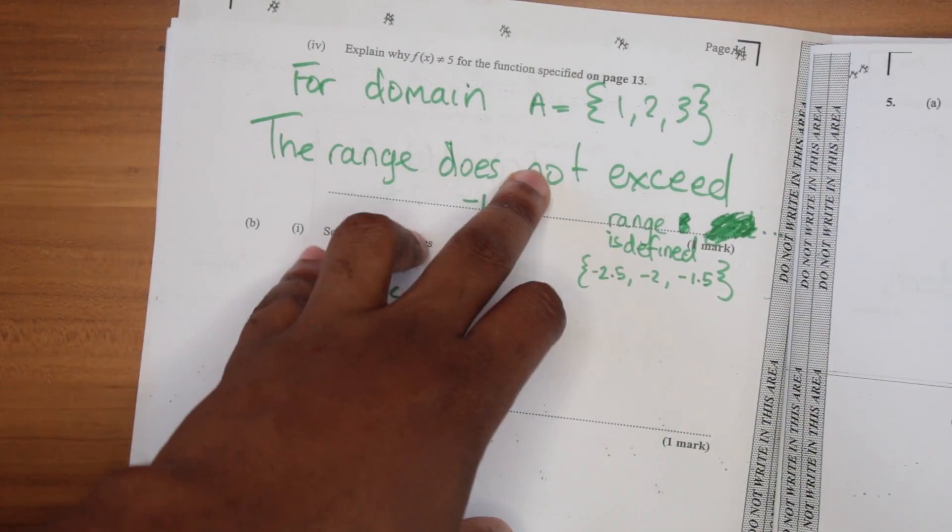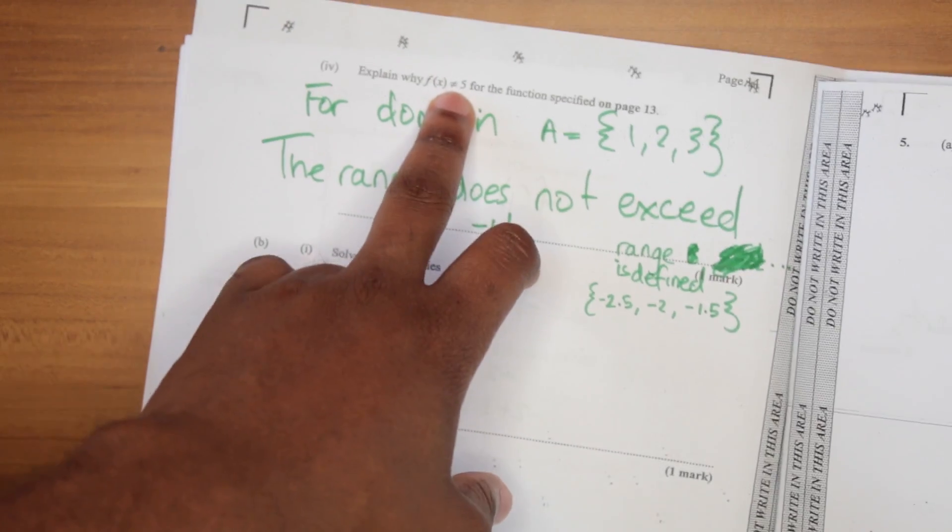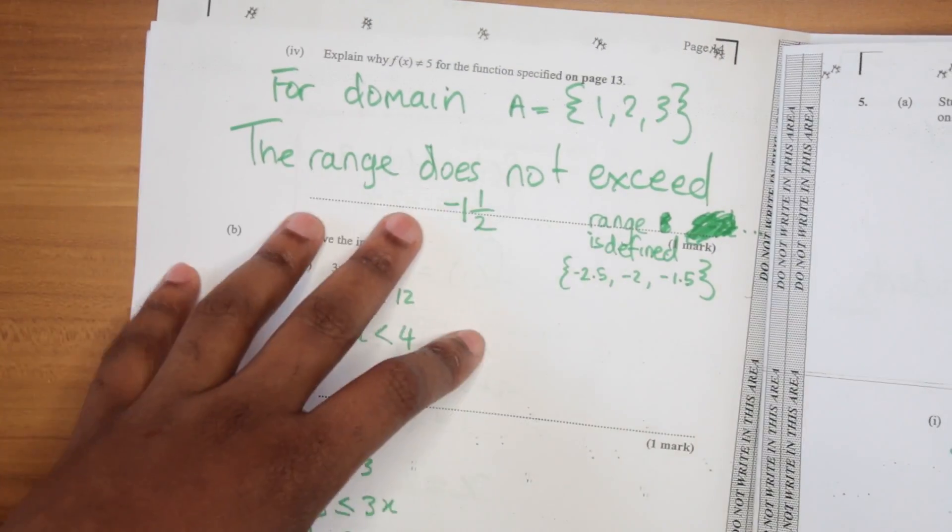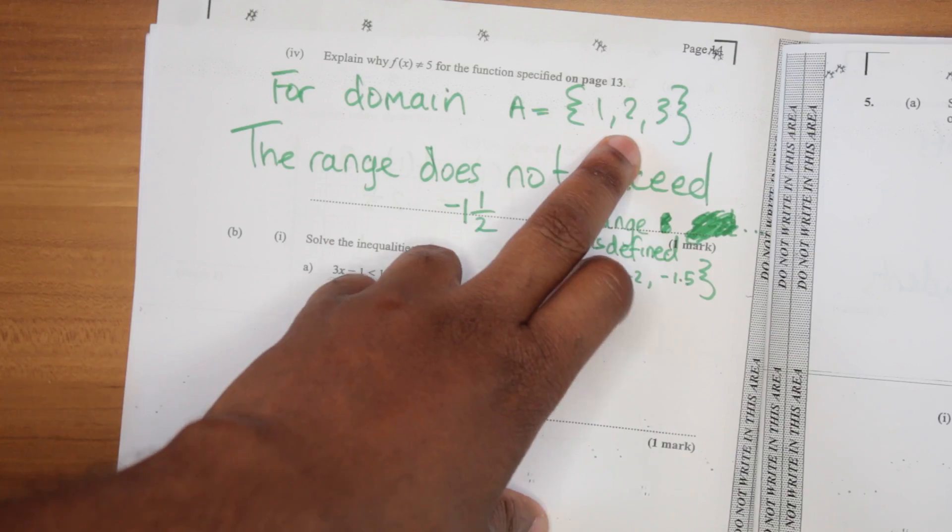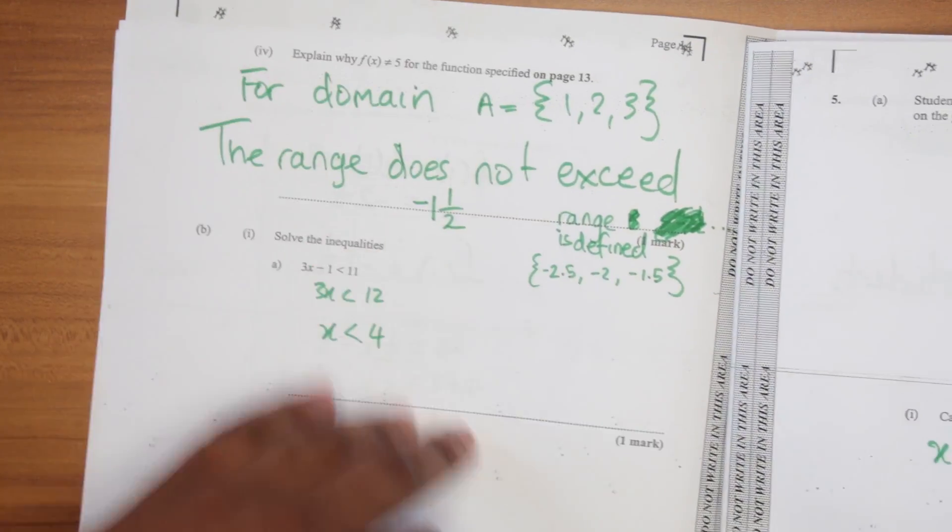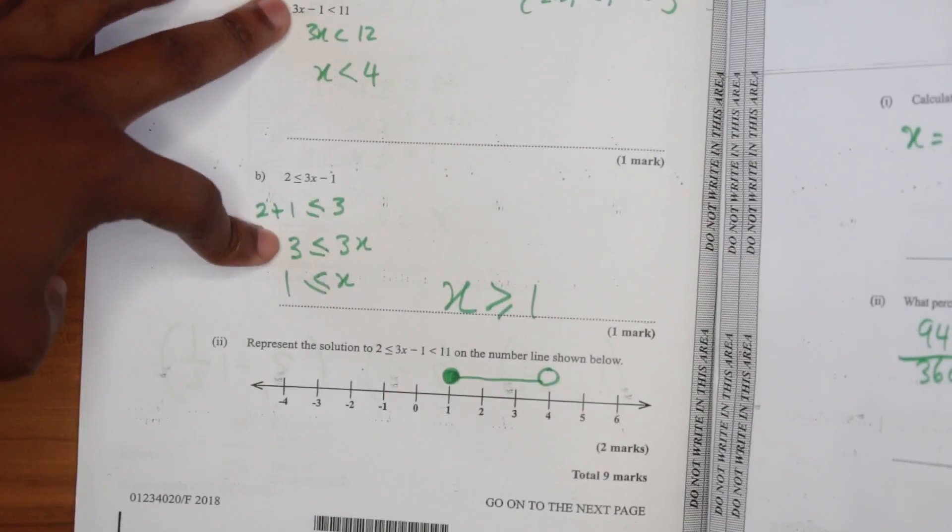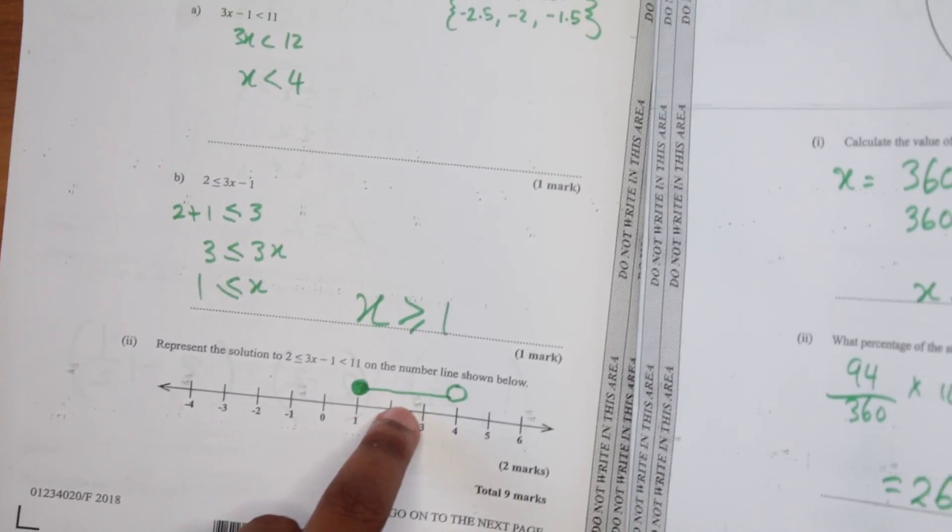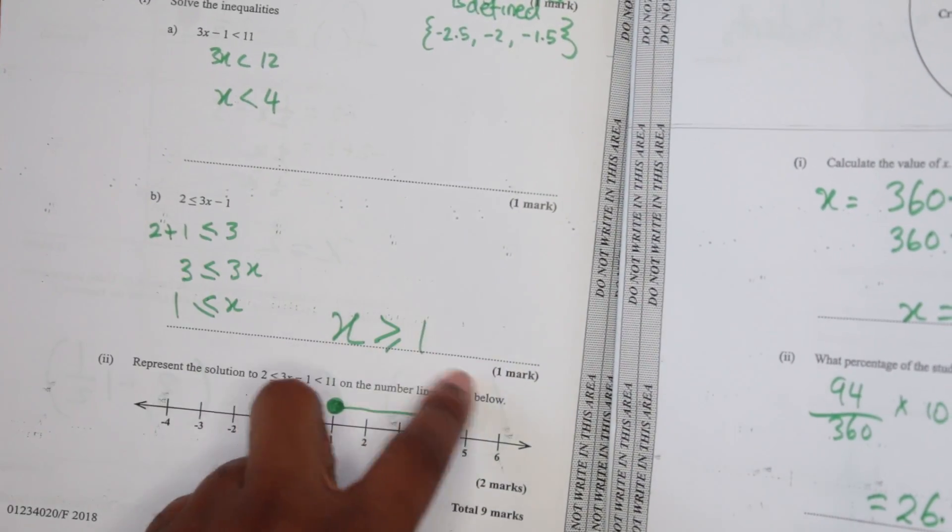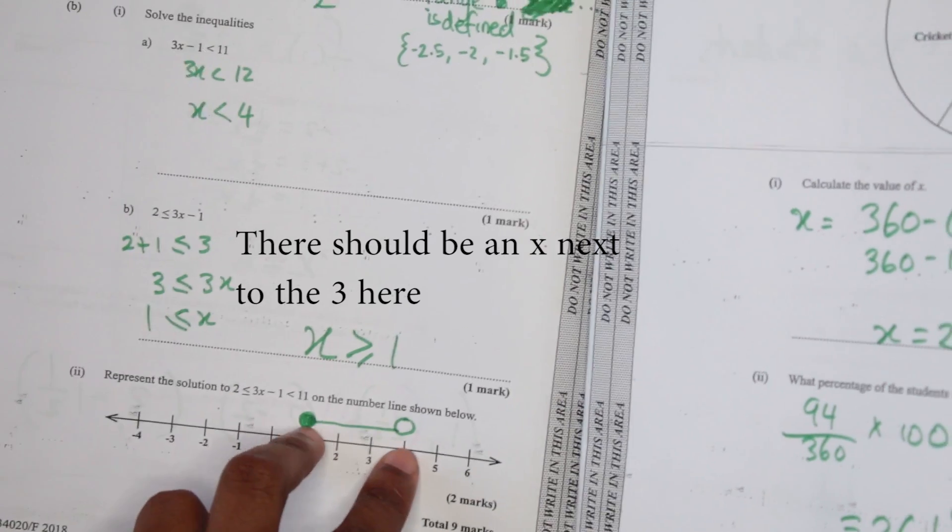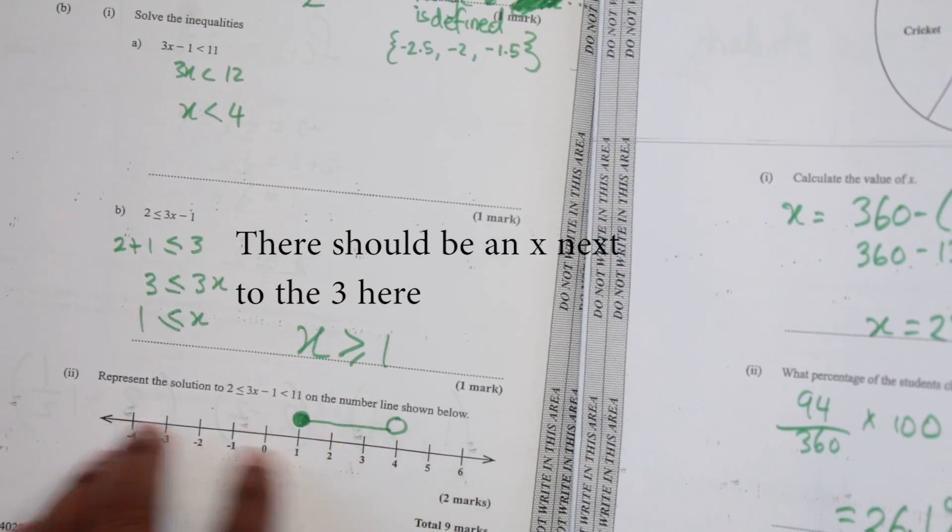Then you had to show why this wouldn't work. F of X is not equal to five. Why is that so? Because the domain is specified. The range is specified. Nobody else would come in the dance. Then you have to solve the inequalities. Then show it on the graph. This inequality, you have to switch around so the sign flipped and you get your little, not on the graph, on the number line, you have to show it.